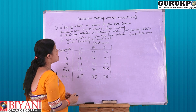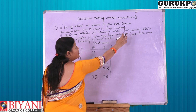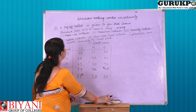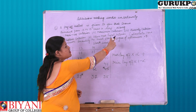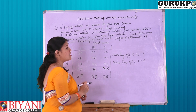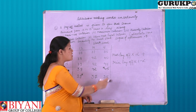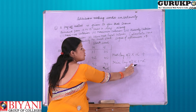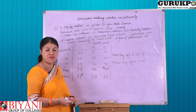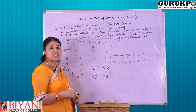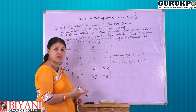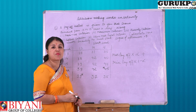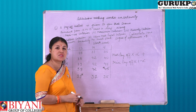Moving on to the next, that is Hurwitz criteria. The formula for Hurwitz criteria is: maximum payoff × alpha + minimum payoff × (1 − alpha). Alpha is the degree of optimism, which is always given in the question. Here, the degree of optimism given to us is 0.7.